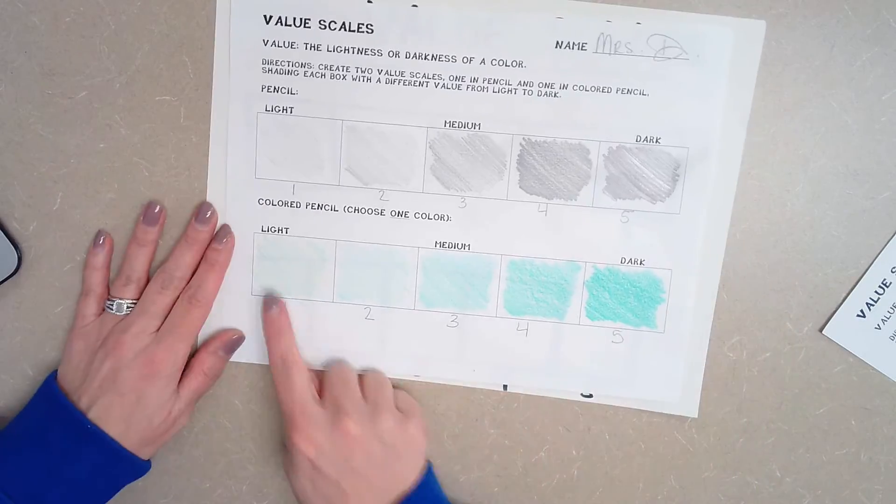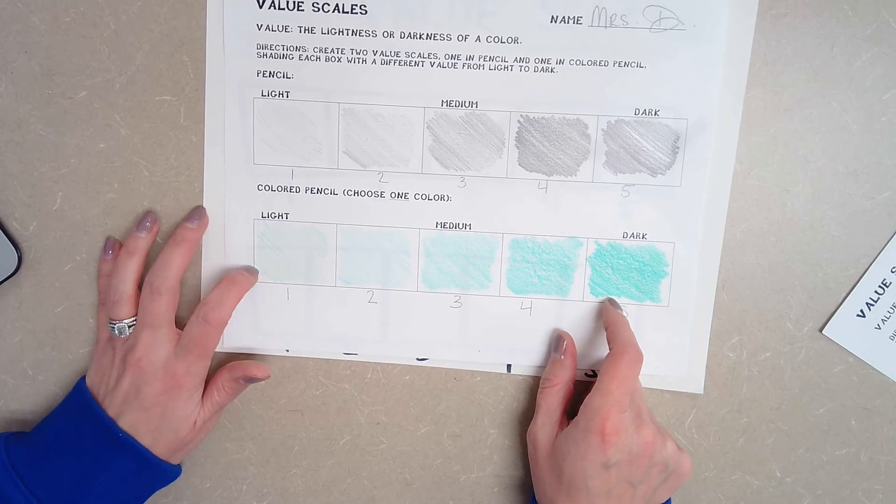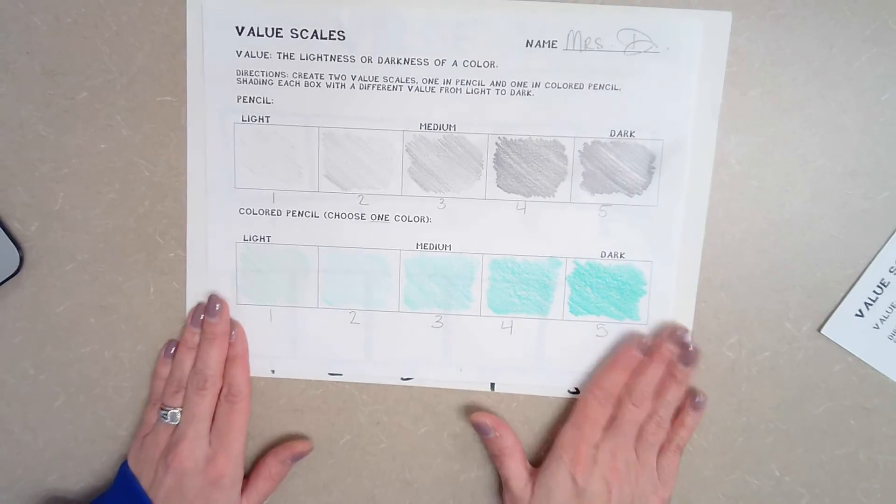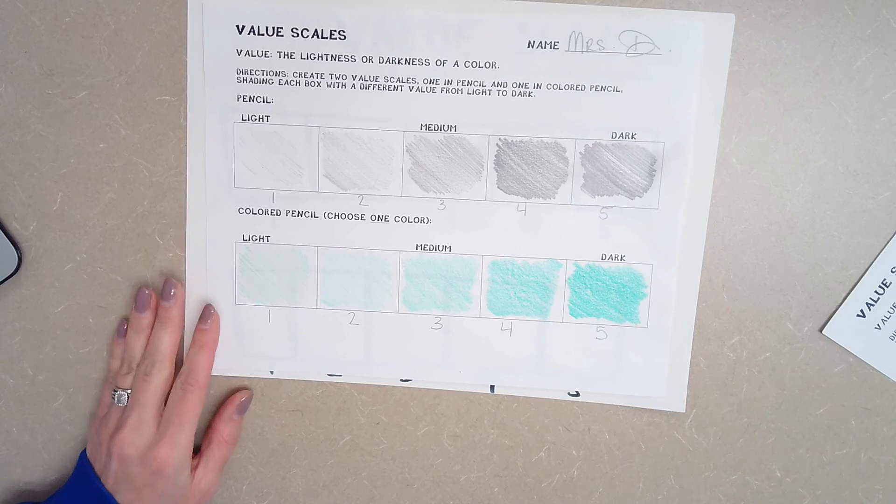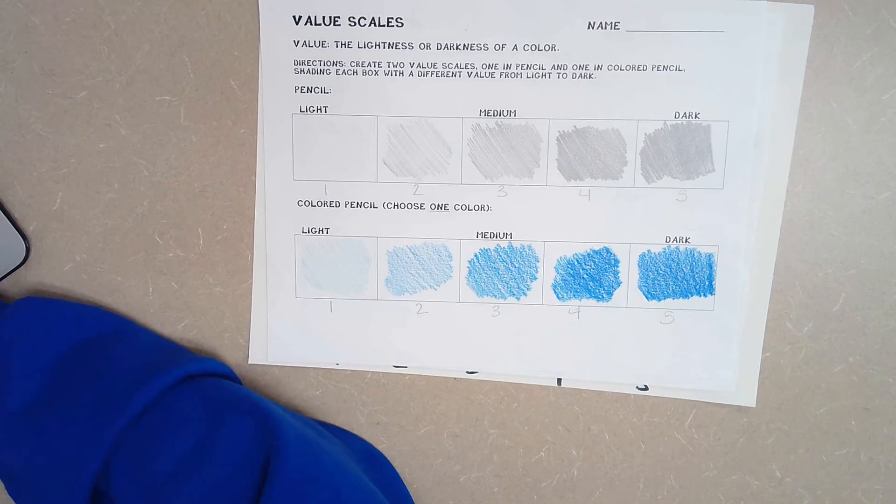All righty. If you don't have a colored pencil, you can still do this using crayon. Just don't press down so hard that you break your crayon. All right, so this is what to do today. Once you're done, take a photo of it and then you can move on to the next project. Thanks guys.